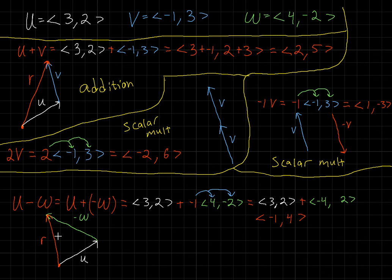Whether you do it graphically or algebraically, you can add, subtract, and scale vectors. As a quick recap: whenever you add vectors, make sure you add only the x components together and only the y components together. For the head-to-tail method graphically, look at the head of the first vector and place the tail of the second vector onto it. If you're adding 6 or 7 vectors, always continue with head-to-tail. Your resultant vector will always be from your very initial point to your very terminal point.